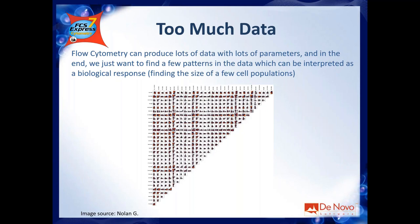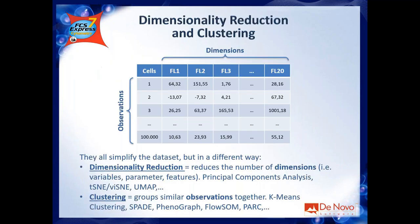What you need to do is simplify your dataset. If you think of your FCS or LMD file as a table with events — cells in each row and parameters as columns, where each column is a marker or fluorescence channel — your FCS file may look like this table.